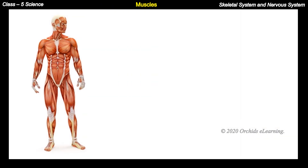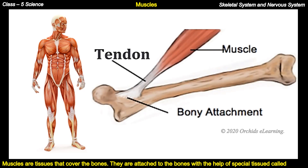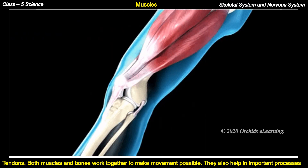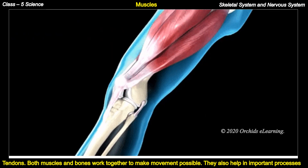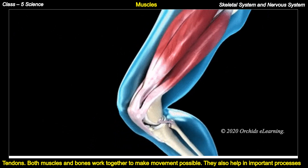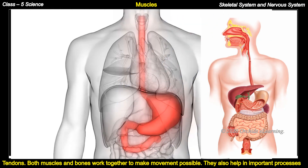Muscles are tissues that cover the bones. They are attached to the bones with the help of special tissue called tendons. Both muscles and bones work together to make movement possible. They also help in important processes such as digestion.